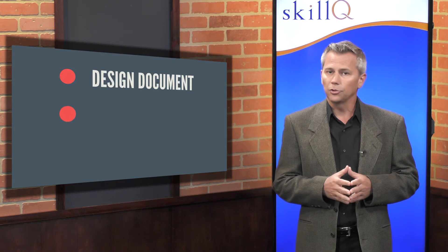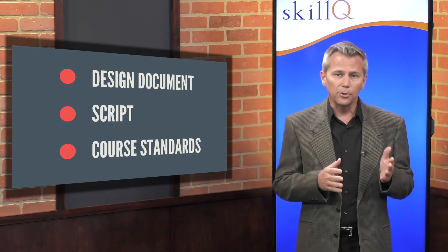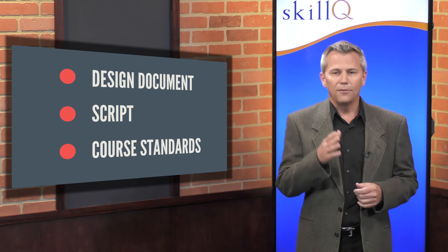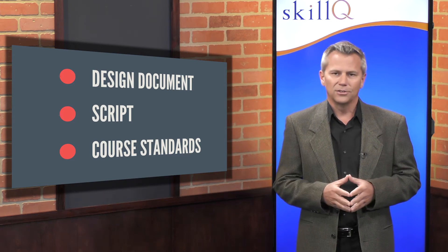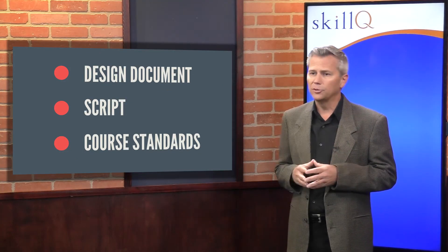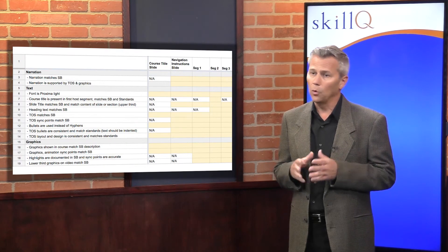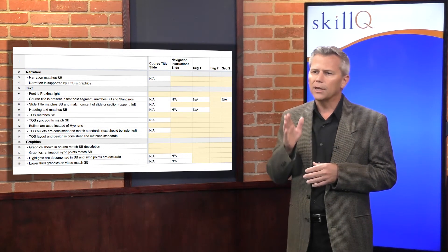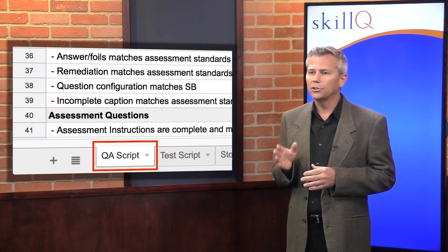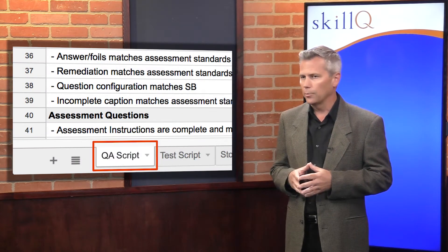Now let's get into an overview of how you should design a test script for your courses. The first step is to assemble and take stock of your input documents: your design document or storyboard, your script if stored separately from your storyboard, and your core standards. I suggest building your test script in a collaborative spreadsheet tool like Google Sheets or a shared Excel worksheet. In our workflow, the QA script is a tab on the larger design document workbook.